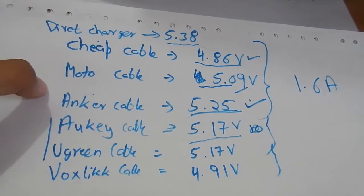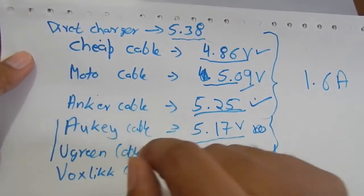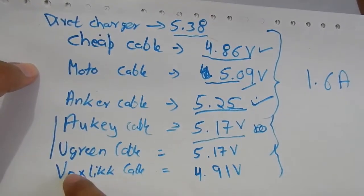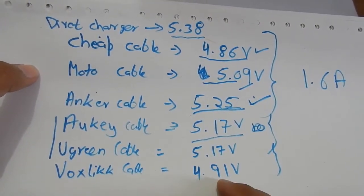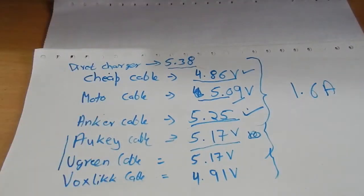In the test we have tested a cheap cable from the local market, the Motorola original cable, the Anker cable, the Auki cable, the Ugreen cable, and the VoxLink cable which was a very cheap cable also. These were all micro USB cables.